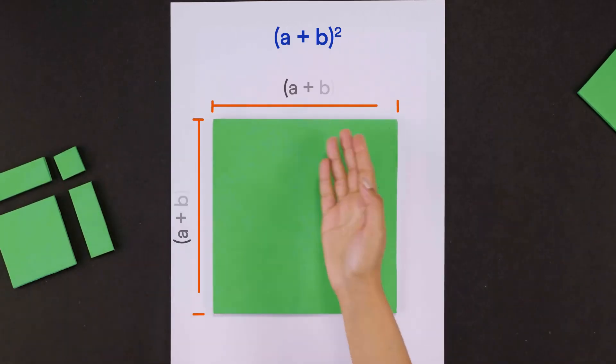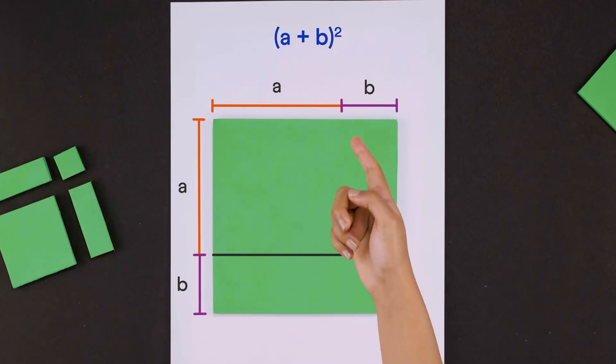In the same way, a plus b whole squared is the area of a square with side a plus b. What is its area? Let's assume a to be some length and b to be the remaining length of the side of this square. Now, let's draw these two lines.